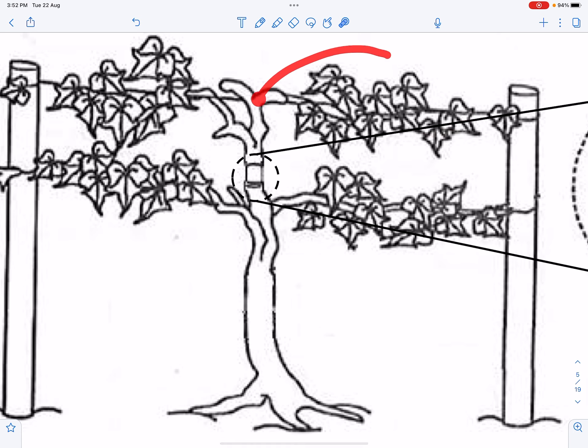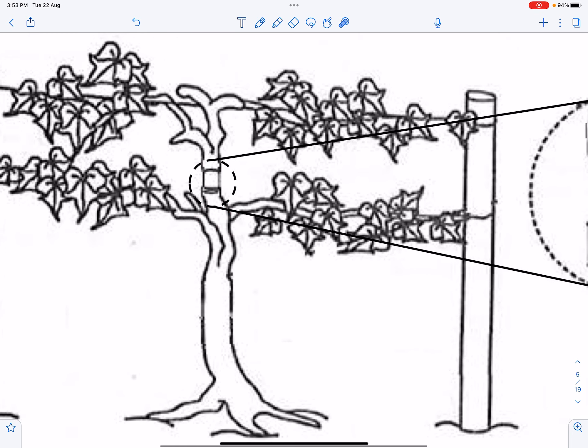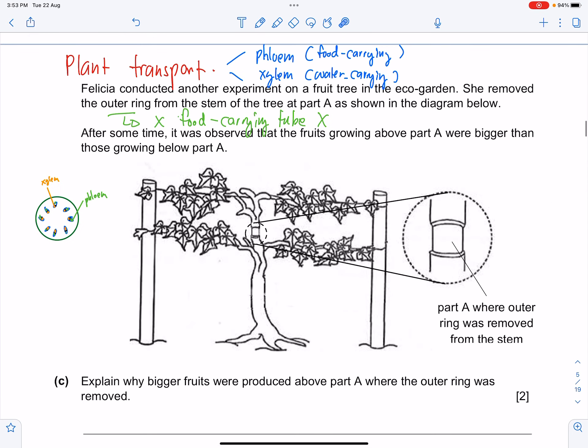So when that happens, what actually happens is that all the food that is made above, above point A, can no longer be transported down below point A. So I repeat again, you need to make a reference below point A.